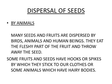Sometimes parrots eat fruits from plants and throw the seeds in another place. Also, some fruits and seeds have hooks or spikes by which they stick to our clothes or to animals that have hairy bodies. When we reach another place, we try to clean our clothes and those seeds are thrown into the soil, where germination takes place. This is also called dispersal of seeds by animals or humans.